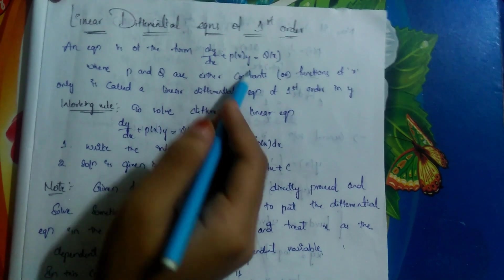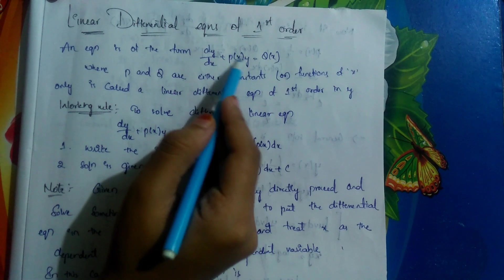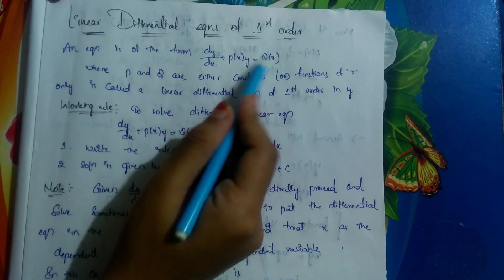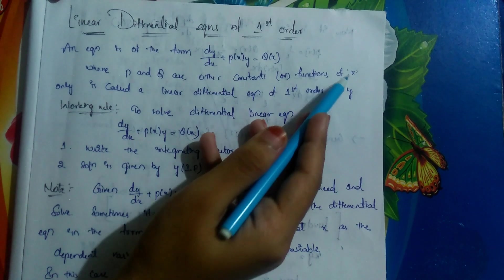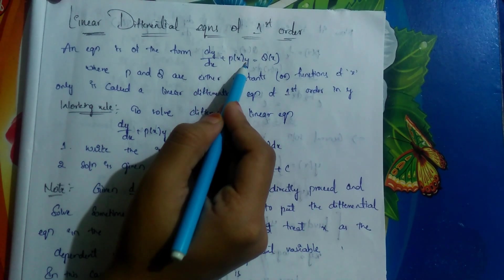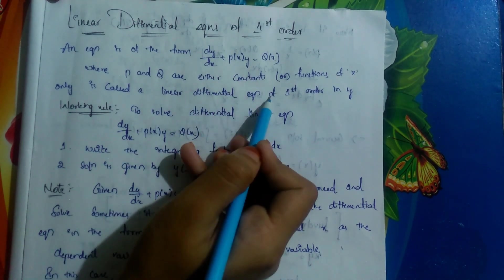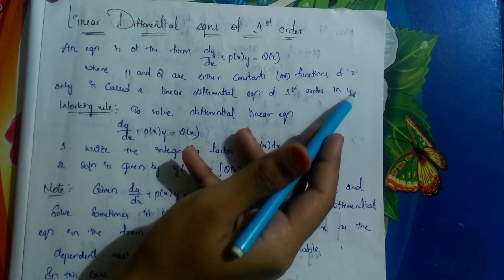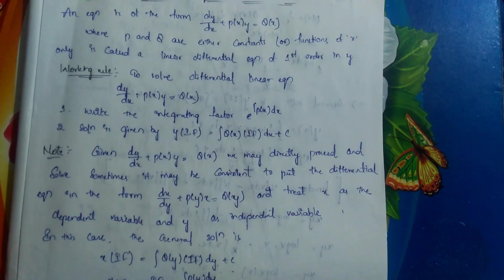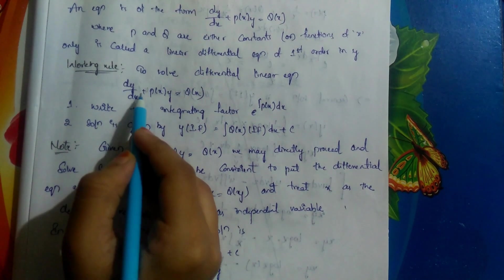The equation is in the form dy/dx plus P(x)·y equals Q(x), where P and Q are functions of x. Here P(x) is multiplied with y, so we can say it is a linear differential equation of first order in variable y. Let's see the working rule to solve this.